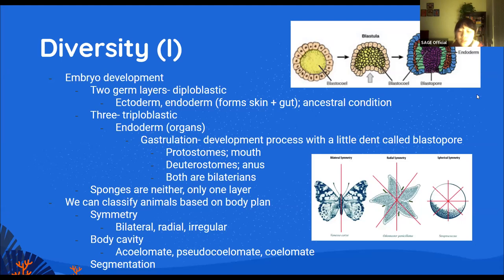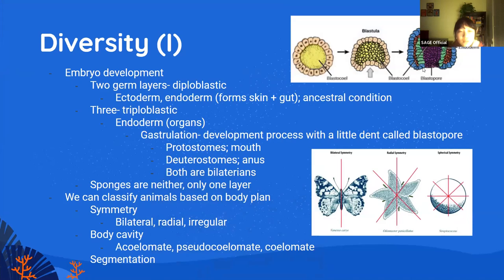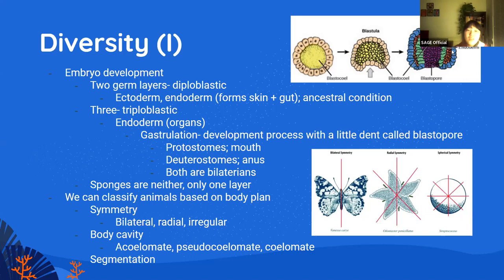In the embryo stage, most animals have either two or three germ layers. If you have two layers of cells, we call it diploblastic. These two layers eventually form the ectoderm and the endoderm — the ectoderm forms the skin and outer coverage, while the endoderm forms the internal guts and organs. This is what our ancestor most likely had. Then we evolved to be more complex, with three layers: the endoderm, ectoderm, and also the mesoderm — the middle one — making those animals triploblastic.